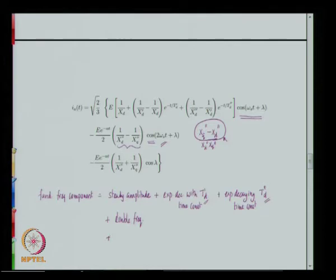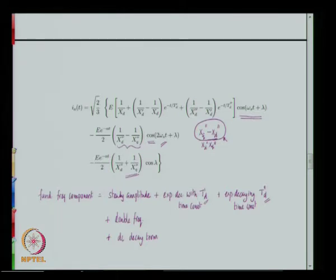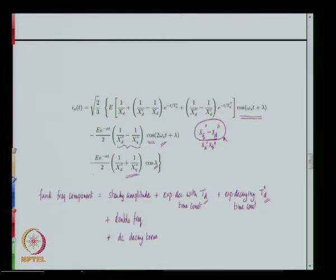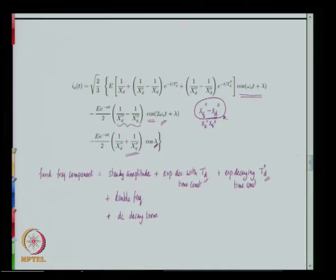There is also a simple DC decaying term with no oscillatory component. Its existence depends on the value of λ: if λ = 0, this term attains the highest amplitude at t=0 (cos λ = 1), whereas if λ = 90°, this term becomes zero. So this DC component depends on the instant of switching. These are the three main components in the expression for ia.